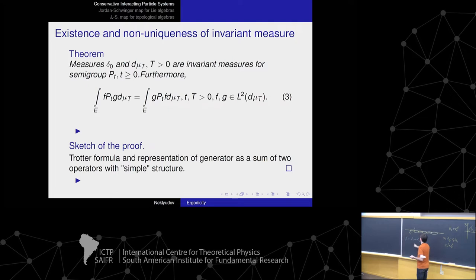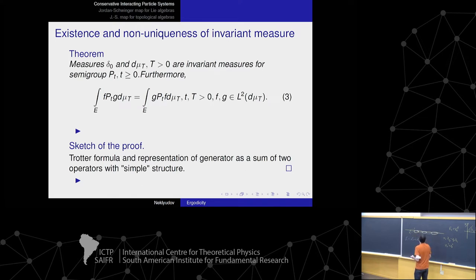We represent operator L as a sum L1 + L2, where L1 is a sum over atoms with even number and L2 is a sum over atoms with odd number. Each operator acts only on two neighboring atoms, so the circles in each sum L1 and L2 do not intersect and the operators commute.